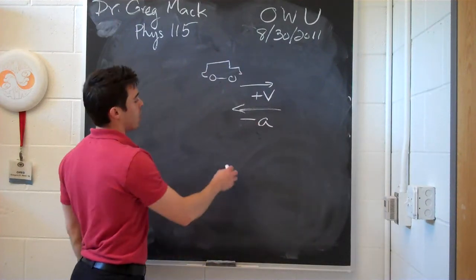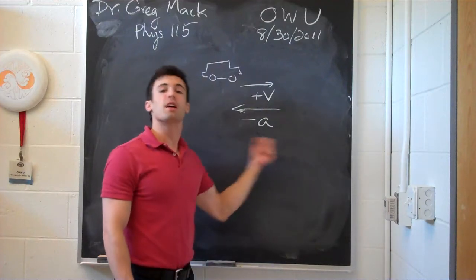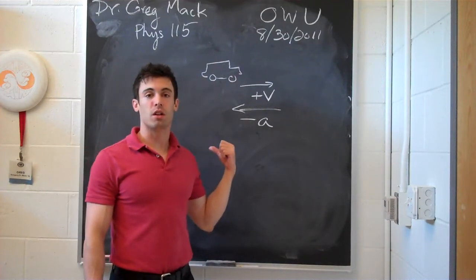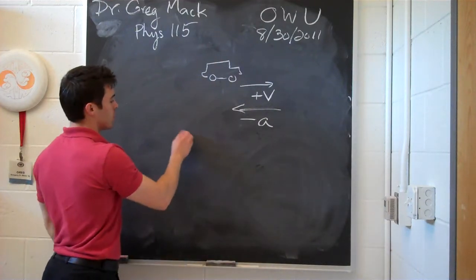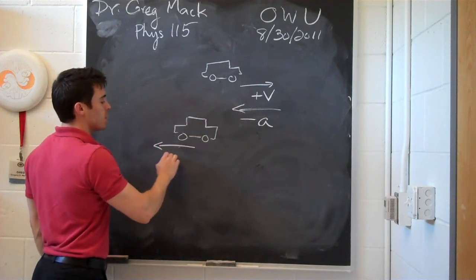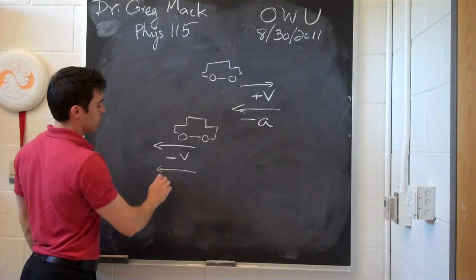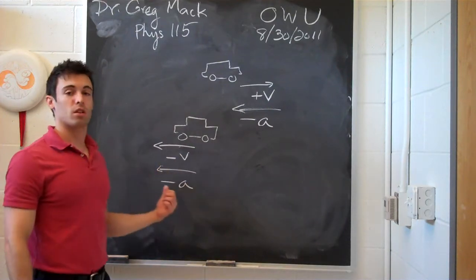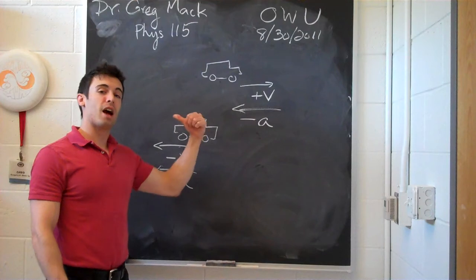Now, if you slow down the car until it's at a stop, and then give it a negative acceleration still, it will go this way, with a negative velocity, with the same negative acceleration. All because it's going now to the left.